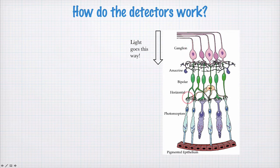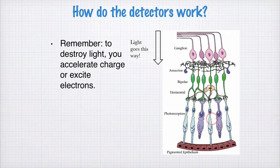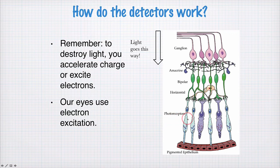But that signal originates from down here at the photoreceptors. So the photoreceptors are kind of where the magic happens. This is where the photon of light is converted into an electrical signal. And if you remember, to absorb a photon, or to destroy light, you either have to accelerate charge or excite electrons. These photoreceptors use electron excitation.